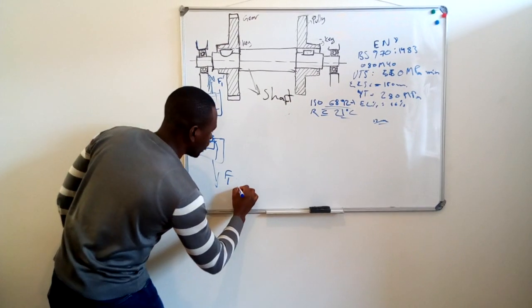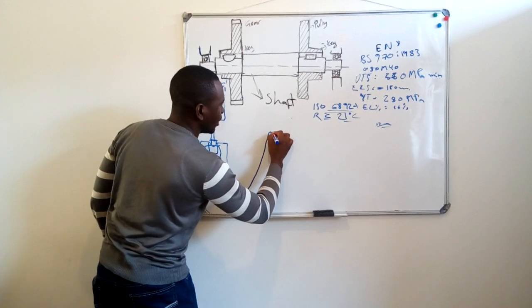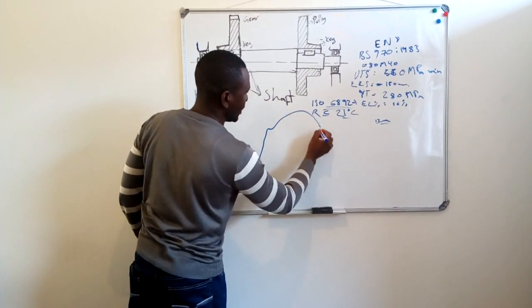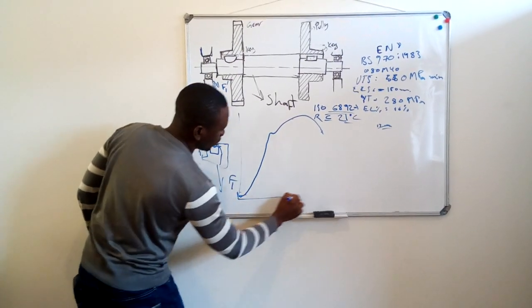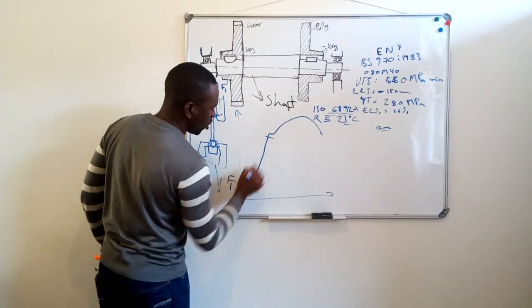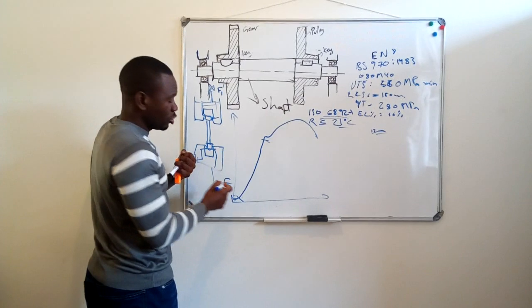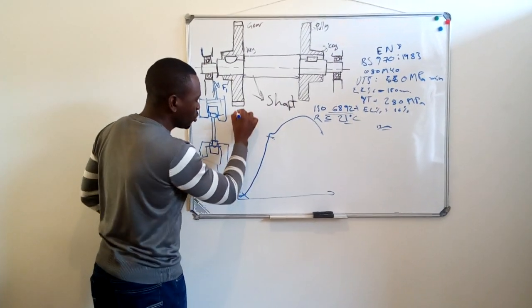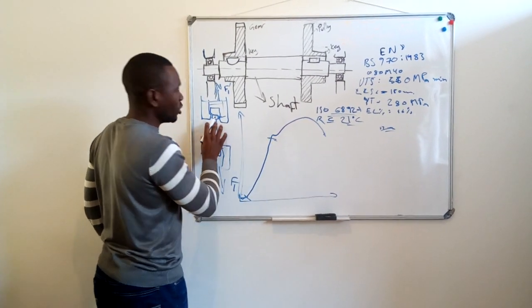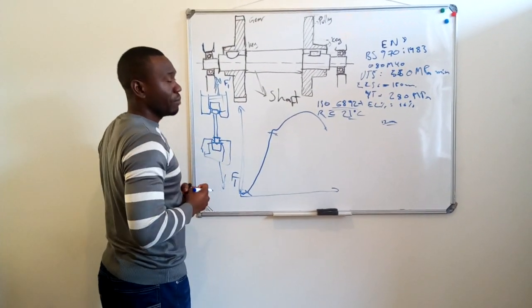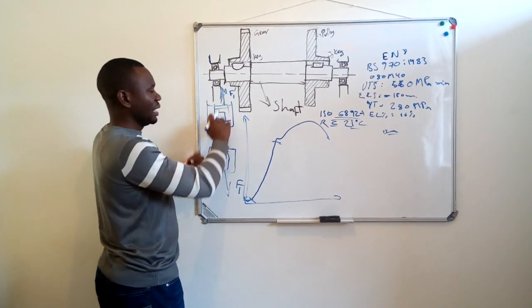We all know the graph of tensile test. It goes like that and then breaks down. What you're seeing here, this is the zone of elasticity. When you're pulling your sample under the machine, this zone here is the zone of elasticity, which means if you can remove the loads while pulling, the material can come back or the sample can come back at its original sizes. I'm talking about the diameter, I'm talking about the length as well.